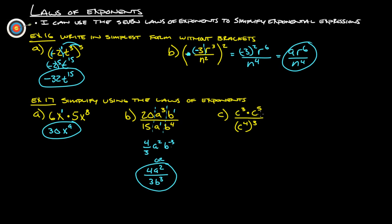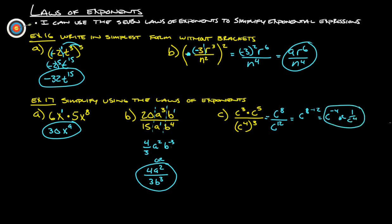This one: c to the 3rd times c to the 5th — since these are not a power raised to a power, we just add them, giving c to the 8th. Over 4 times c to the 4th to the 3rd power — multiply those: 4 times 3 is c to the 12th. To simplify: c to the 8 minus 12 is c to the negative 4th, or 1 over c to the 4th.